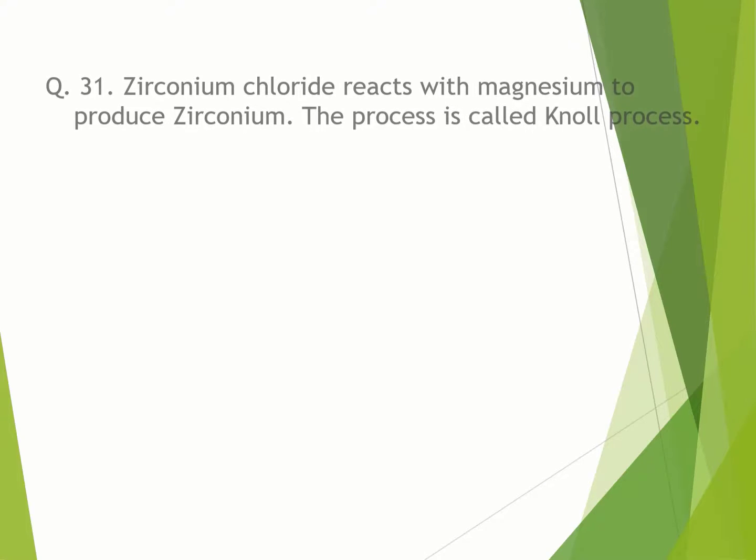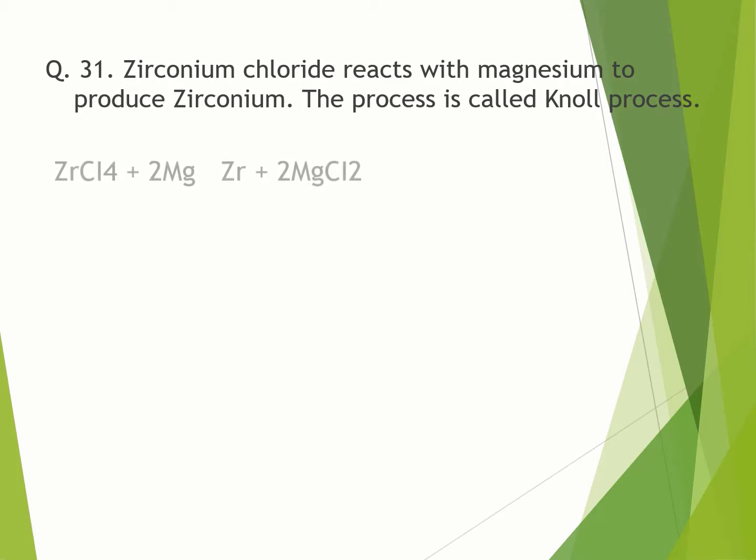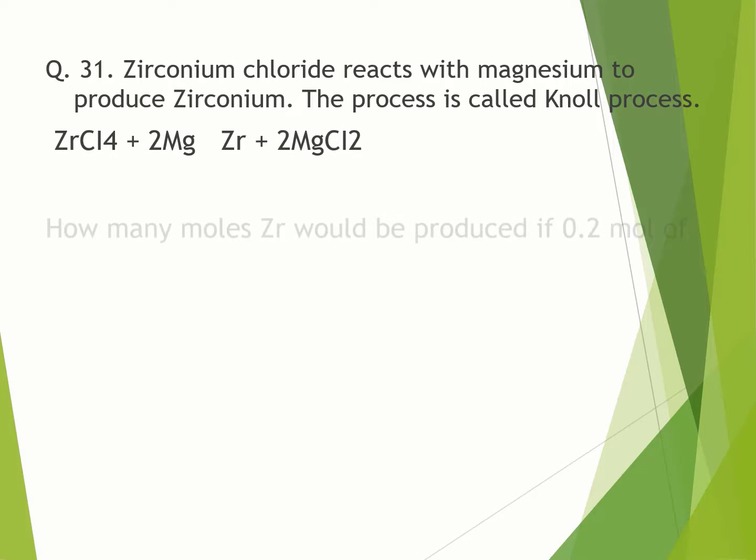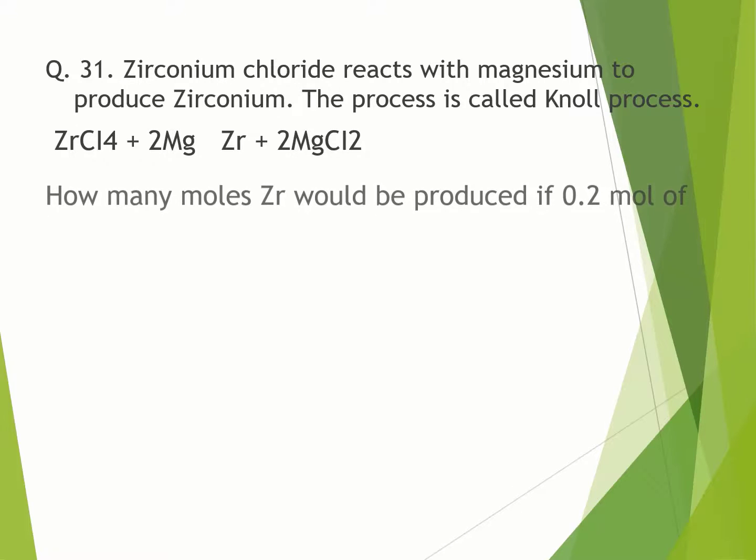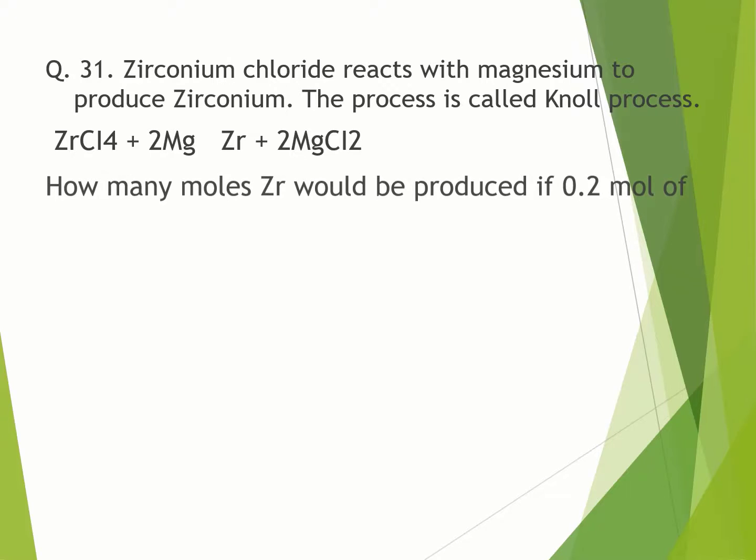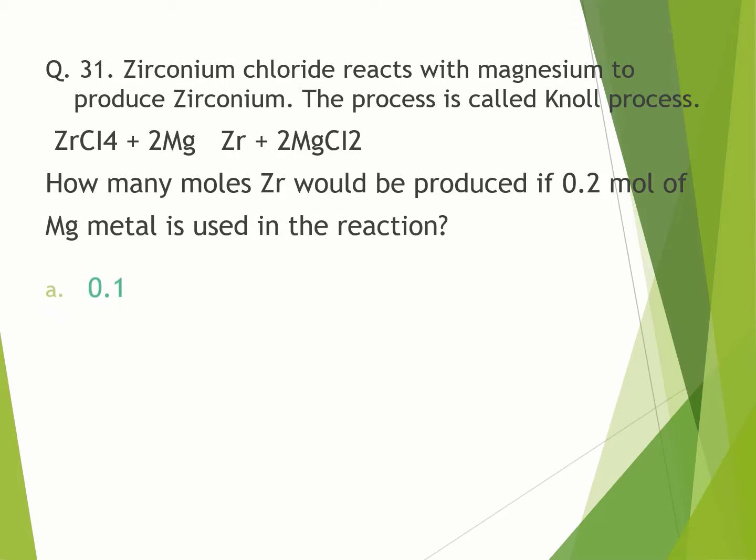Question number 31. Zirconium chloride reacts with magnesium to produce zirconium. The process is called Knoll process. How many moles of zirconium would be produced if 0.2 moles of magnesium metal is used in the reaction? A. 0.1. B. 0.01. C. 0.20. D. 0.05. Correct option is A.